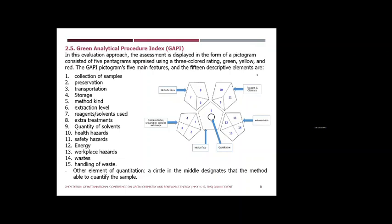The fifth approach is Green Analytical Procedure Index, or GAPI. This tool is based on measuring 15 parameters or criteria to assess the analytical methods. The 15 items include collection of samples, preservation, transportation, storage, method type, scale of extraction, solvents and reagents, additional treatment of sample, amount of solvent used, health hazards, safety, energy, waste-based hazards, waste, and handling of the waste.